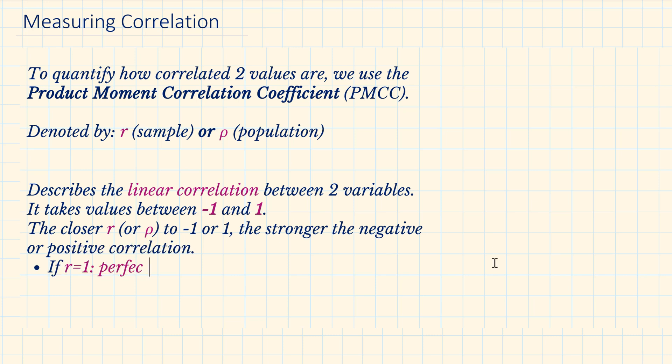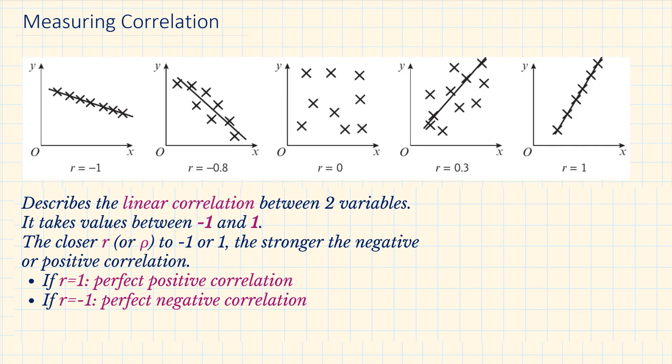If R is equal to 1, we have a perfect positive correlation. If R is minus 1, it is perfect negative linear correlation. If it's a perfect correlation, negative or positive, if you join all the points, they will form a straight line, as you can see it on the diagrams.